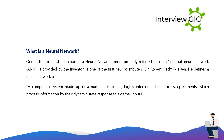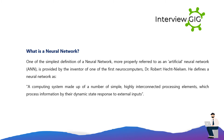What is a neural network? One of the simplest definitions of a neural network — more properly referred to as an artificial neural network — is provided by the inventor of one of the first neurocomputers, Dr. Robert Hecht-Nielsen. He defines a neural network as a computing system made up of a number of simple, highly interconnected processing elements, which process information by their dynamic state response to external inputs.